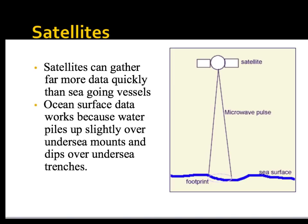A much easier and quicker method is to use satellites, which can gather a lot more data a lot quicker than a person on a ship. The way this works is that water will pile up slightly over undersea mountains, and it will dip where there is a trench, allowing satellites to map the ocean floor.